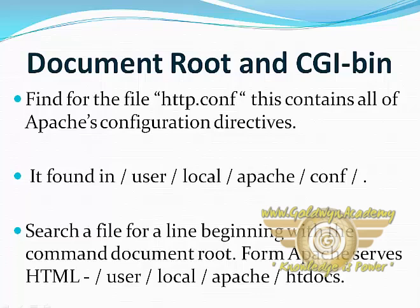This file contains all of Apache's configuration directives which tell it how to respond to web requests. It is usually found in /usr/local/apache/conf. You can also try using the locate command. It will find the document root of a Common Gateway Interface script. Look down the file for a line beginning with the DocumentRoot command.